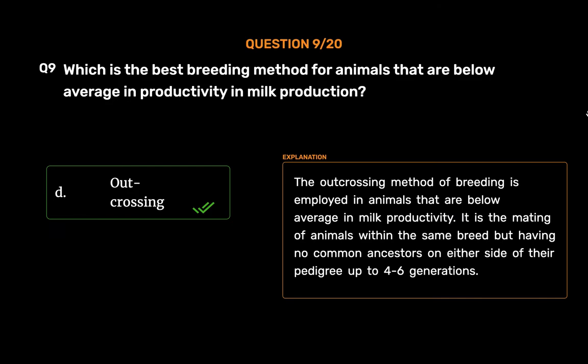The outcrossing method of breeding is employed in animals that are below average in milk productivity. It is the mating of animals within the same breed but having no common ancestors on either side of their pedigree up to four to six generations.